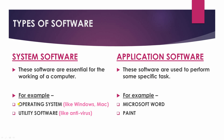The examples of system software are operating systems — for example, Windows, Mac, etc. — and utility softwares, for example, antivirus. Examples of application software are Microsoft Word, Paint, PowerPoint and much more.